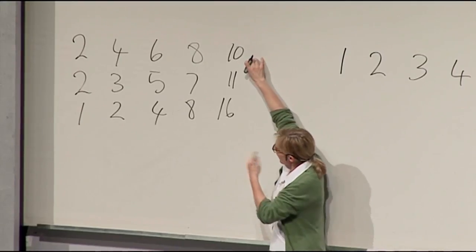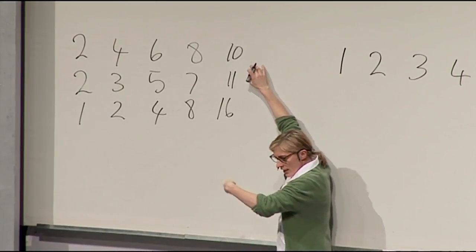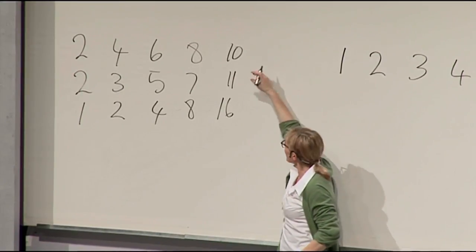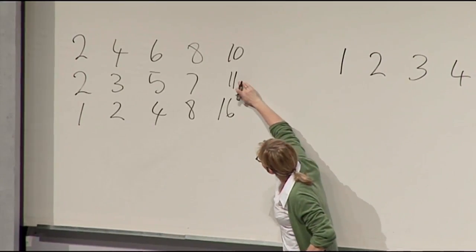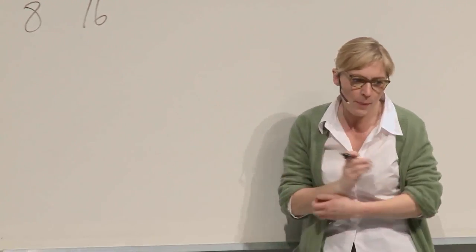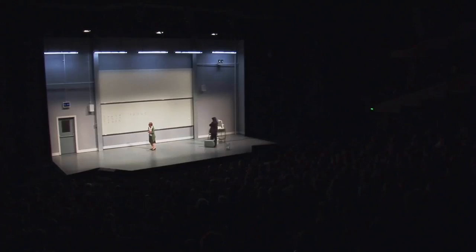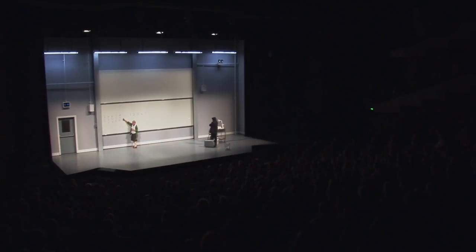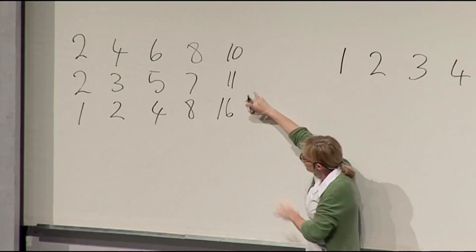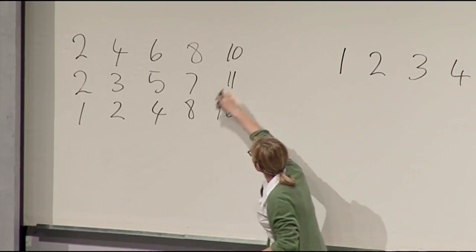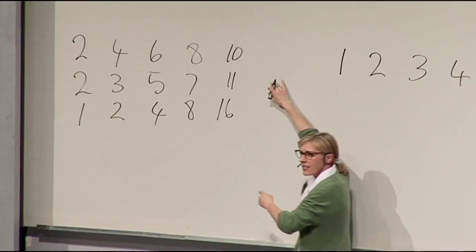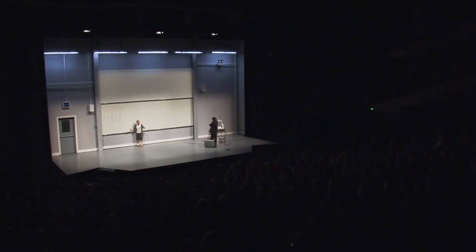With this sequence, the pattern is very clear: 2, 4, 6, 8, 10, 12, 14. But with this sequence — the primes — a prime number is only divisible by 1 and itself, and the pattern of the primes is less obvious. Is there a pattern at all? 7, 11, 13, 17, and so on. Sometimes to find the hidden pattern we have to look at things in a new way.